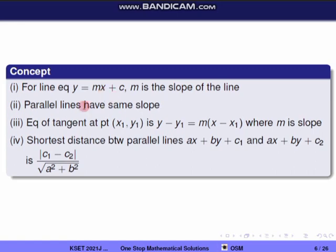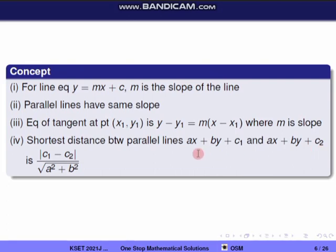For a line equation y equal to mx plus c, parallel lines have the same slope. For the tangent at point (x₁, y₁) with slope m: y minus y₁ equal to m(x minus x₁). The shortest distance between two parallel lines ax plus by plus c₁ and ax plus by plus c₂ is |c₁ minus c₂| divided by root of a² plus b².